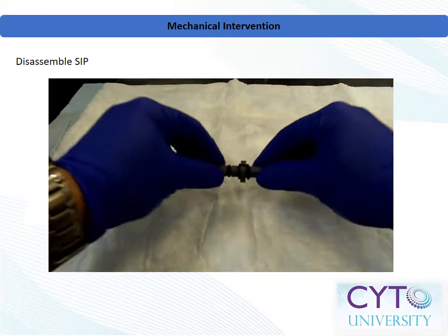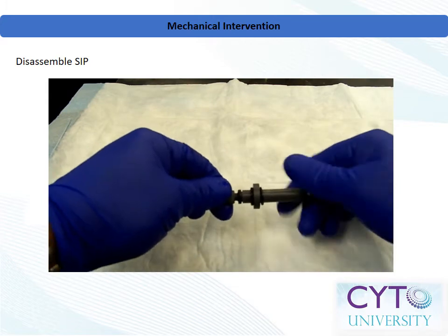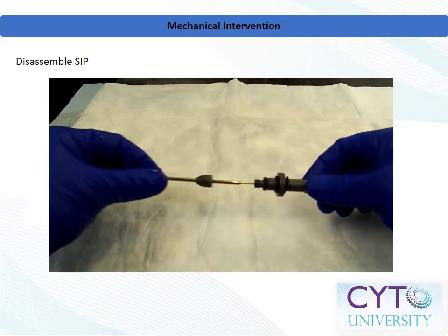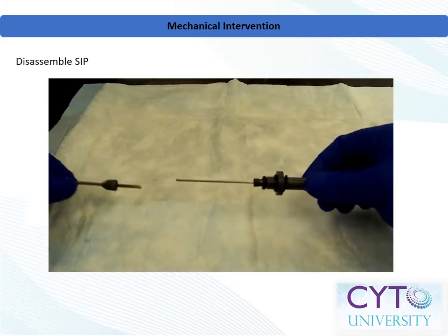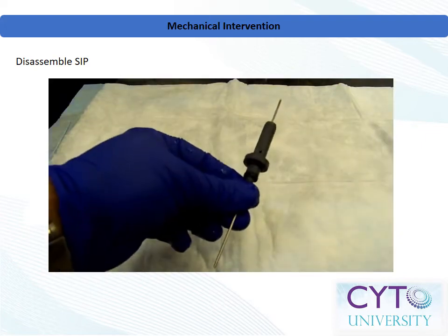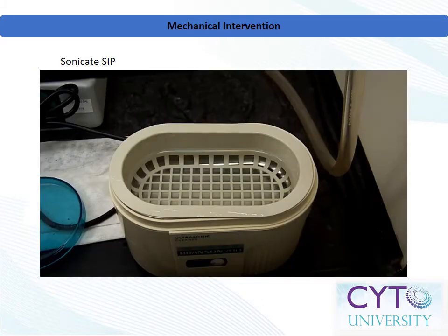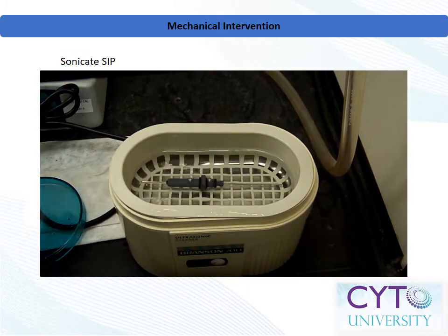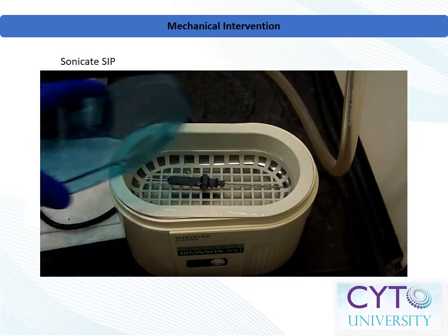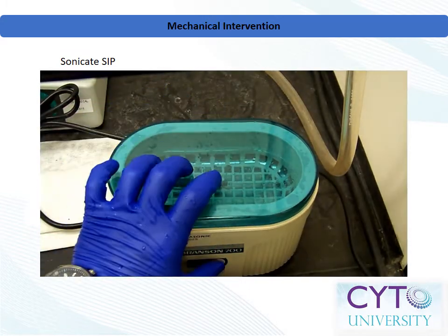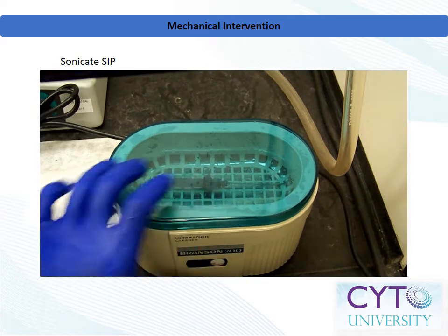With the sample injection apparatus out of the instrument, take special care not to drop or impact the apparatus onto any surface. Remove the outer sample injection port tube by unscrewing the cone, then gently slide the outer tube off of the inner tube. We will present three options to remove a clog from the sample injection tube, in order from most gentle to least gentle.